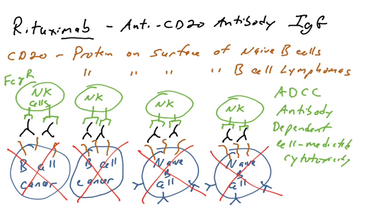In this instance, these NK cells are going to kill all of these cells. NK cells work in this method using something called antibody-dependent cell-mediated cytotoxicity. Naturally in the body, NK cells use FC gamma receptors to target cells covered in IgG. We're using this drug, a foreign molecule injected into the body, to get NK cells to target B cells. Why would you want to target B cells? In individuals who have B cell lymphomas or certain autoimmune disorders mediated by B cells, you might want to get rid of their B cells.